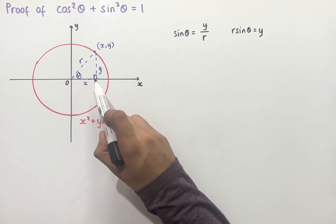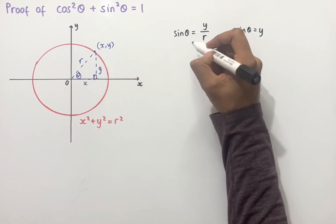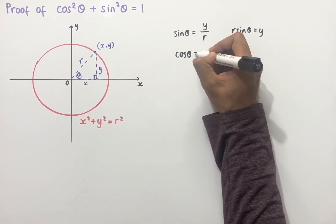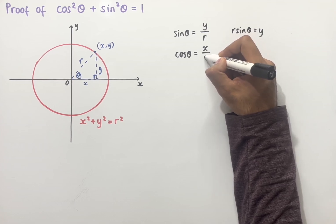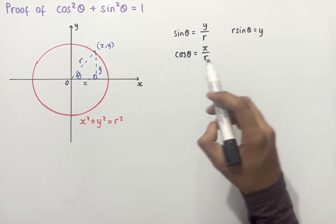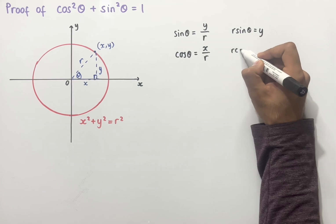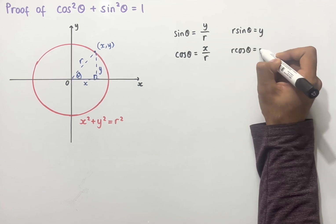The second equation we can form is using cos. So cos of theta equals the adjacent side over the hypotenuse. And so in this case, the adjacent side is x, and the hypotenuse is the same as before, which is r. And so multiplying both sides by r, we then get r cos theta, which equals x.